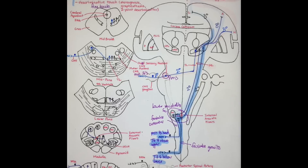You travel through your PLIC, or your posterior limb of the internal capsule, and then you synapse at your postcentral gyrus. It is the exact same pathway for your upper body.